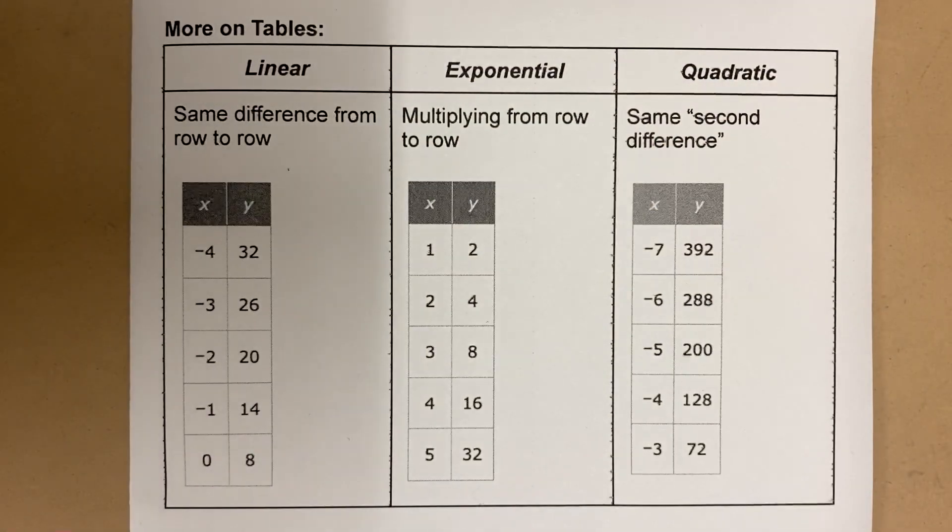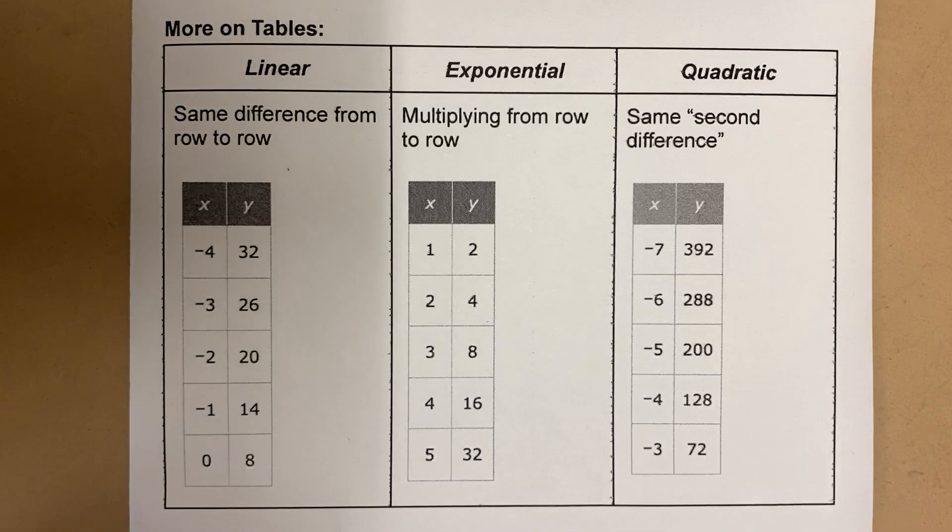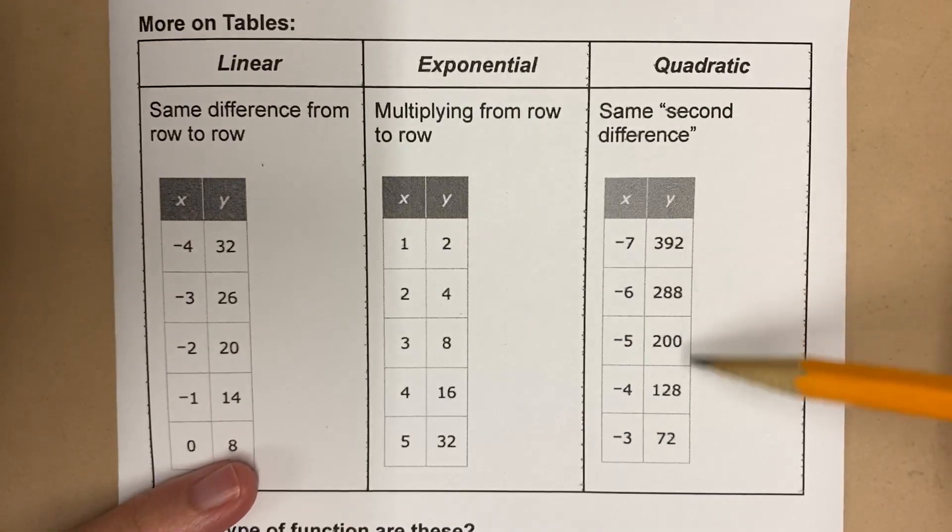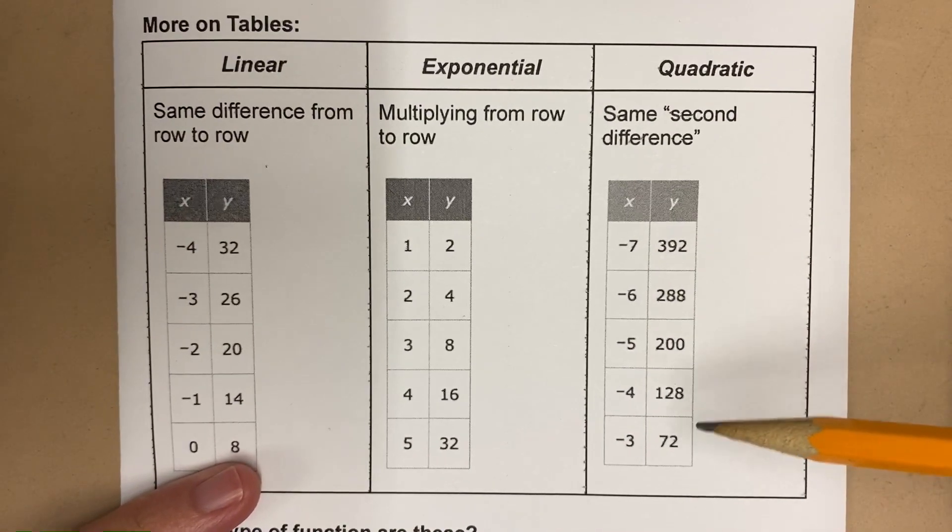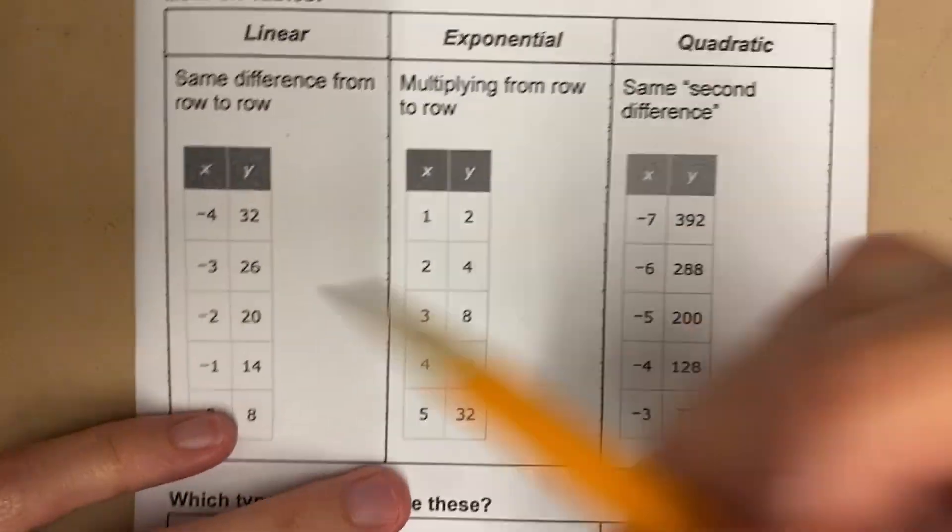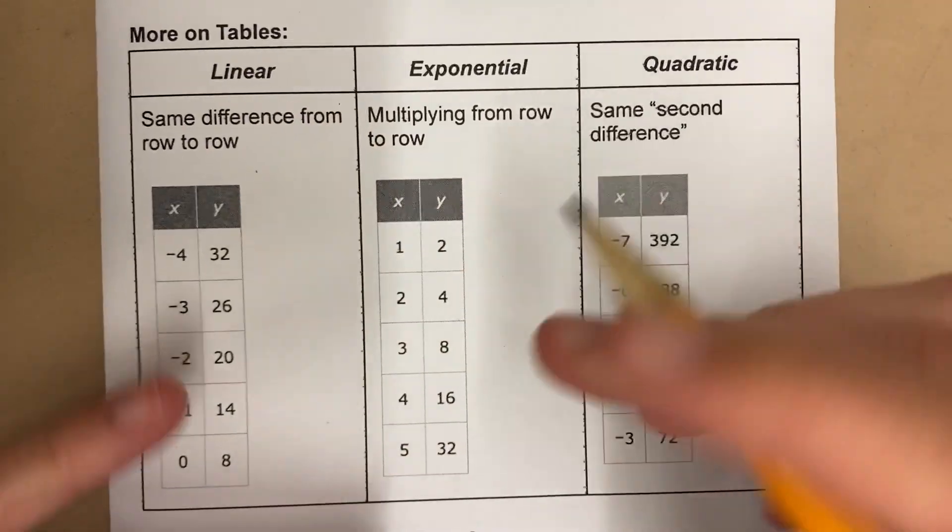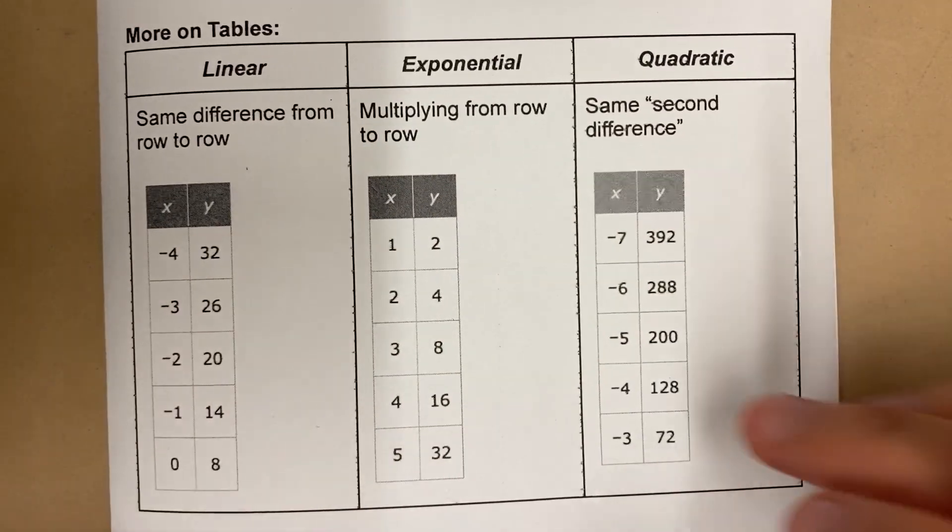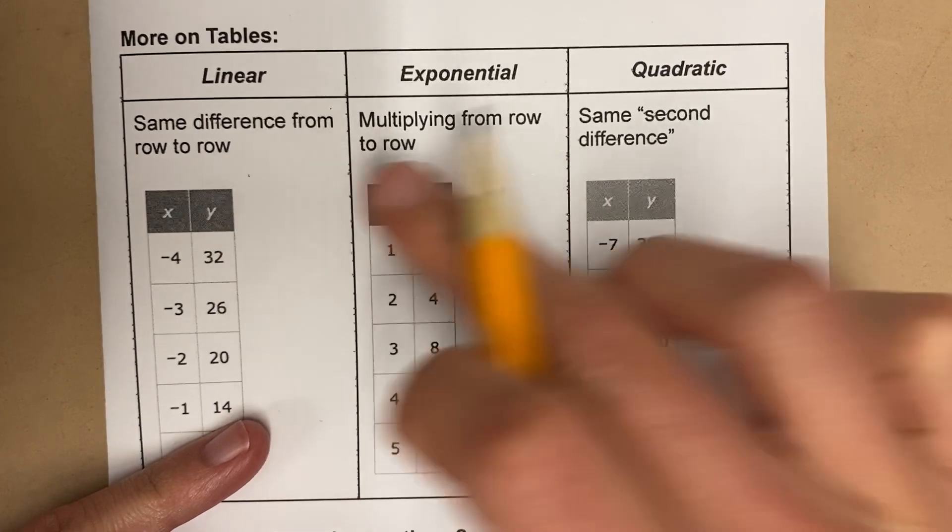Tables can get tricky. The reason tables can get tricky is the numbers are not always super simple. You can see these numbers are kind of big. Sometimes numbers are negative. These all happen, but here's the deal. The patterns stay the same, so we can use a calculator when we need to and we can still notice the patterns.